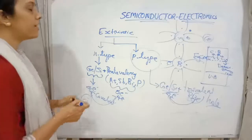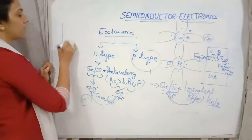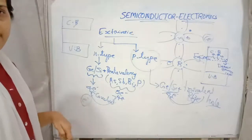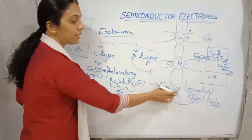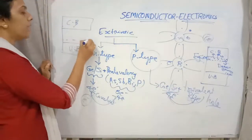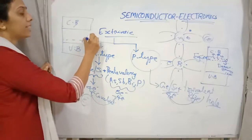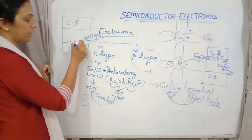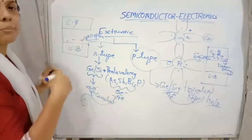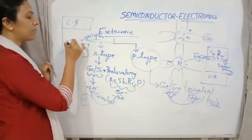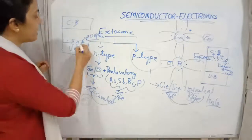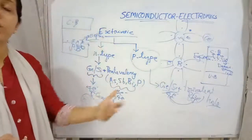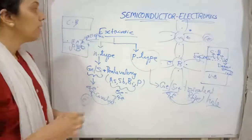Regarding the energy band in p-type semiconductors: the valence band is at the bottom and the conduction band above, with energy gap less than 3 eV. The valence electrons of the trivalent impurity have an energy level very near to the valence band — this is called the acceptor energy level. When temperature increases, electrons from the valence band shift towards the acceptor energy level, generating holes that act as carriers of electricity.